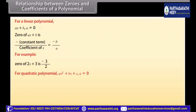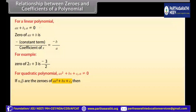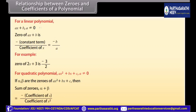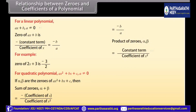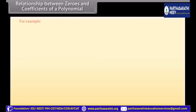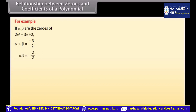For a quadratic polynomial ax squared plus bx plus c, where a is not equal to 0, if alpha and beta are the zeros, then the sum of zeros, alpha plus beta, equals minus coefficient of x upon coefficient of x squared, which equals minus b upon a. The product of zeros, alpha times beta, equals constant term upon coefficient of x squared, which equals c upon a. For example, if alpha and beta are zeros of 2x squared plus 3x plus 2, then alpha plus beta equals minus 3 upon 2, and alpha times beta equals 2 upon 2, which equals 1.